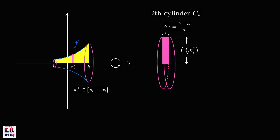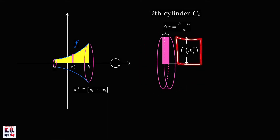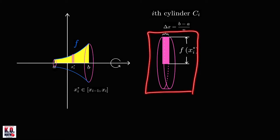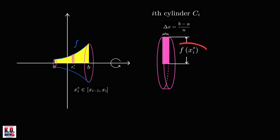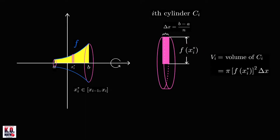The radius of this cylinder equals the function value at x sub i star, which is the height of this rectangle. From the volume formula for a right circular cylinder, V = pi r squared h, the volume of the ith cylinder is pi times f of x sub i star, quantity squared, times delta x.